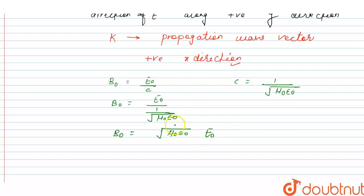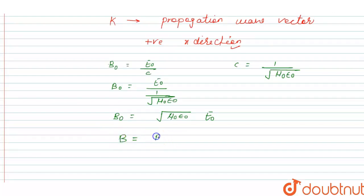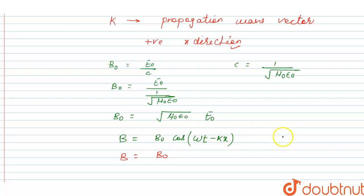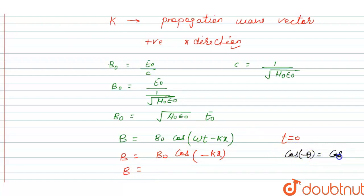The value of E0 is given as E0. Then B = B0 cos(ωt − kx). We have to find the value of B at t = 0, so putting t = 0 gives B = B0 cos(−kx). Since cos(−θ) = cos(θ), we can write B = B0 cos(kx).